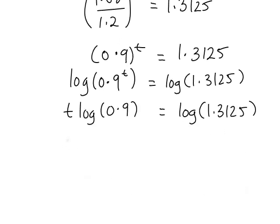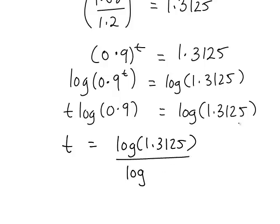So we want to make t the subject, so dividing by log of 0.9 will cancel that from the left hand side to give us t equals log of 1.3125 divided by log of 0.9. And to four decimal places, that works out to be t equals negative 2.5809.